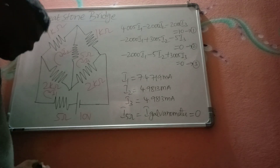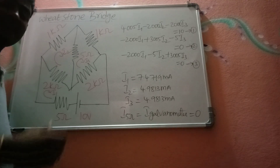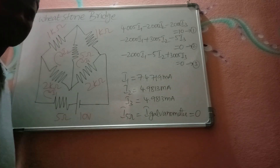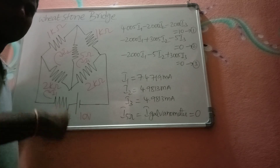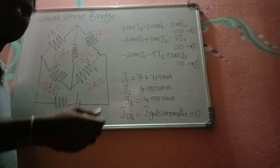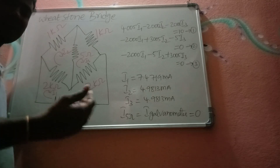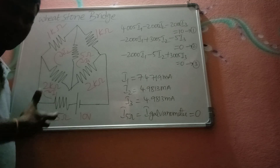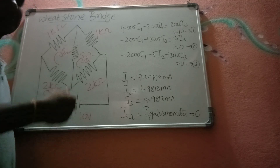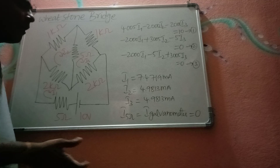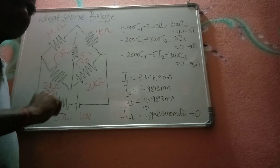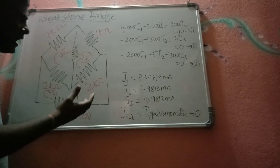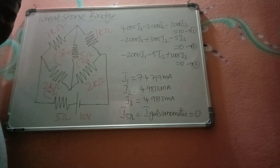Hi friends. Today we will see a simple way of finding the balance condition of a Kelvin's double bridge. But before going to the Kelvin's double bridge, first we need to understand the effect of the internal resistance of a battery and the resistance of the galvanometer as a detector on the balance condition. To understand this, we are taking a numerical example of a Wheatstone bridge.